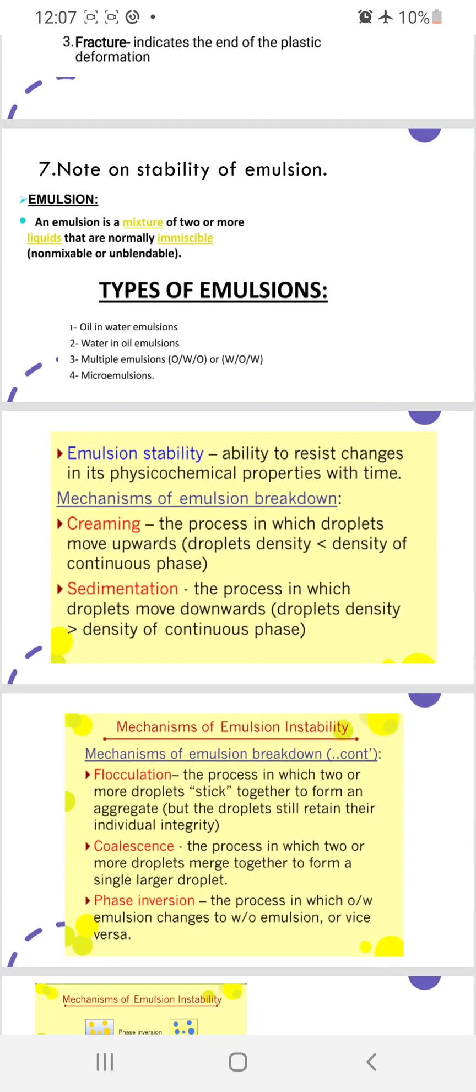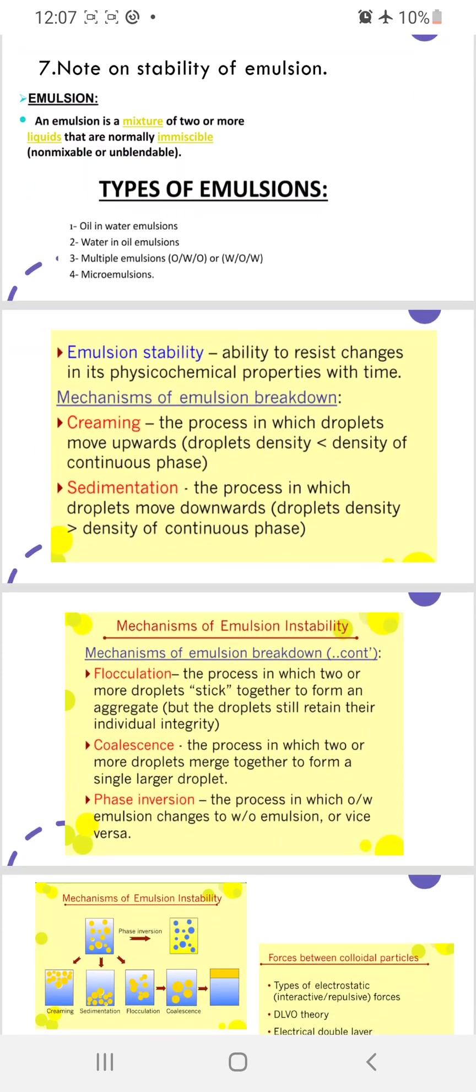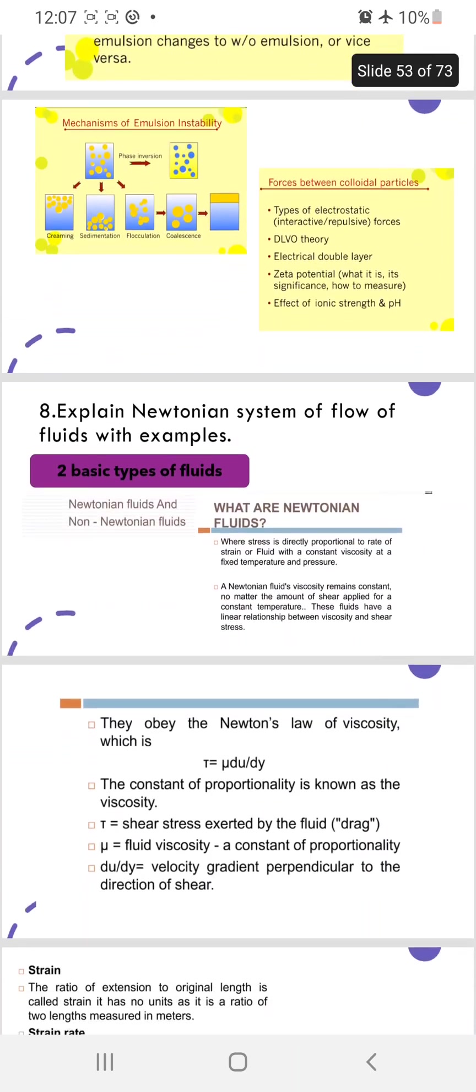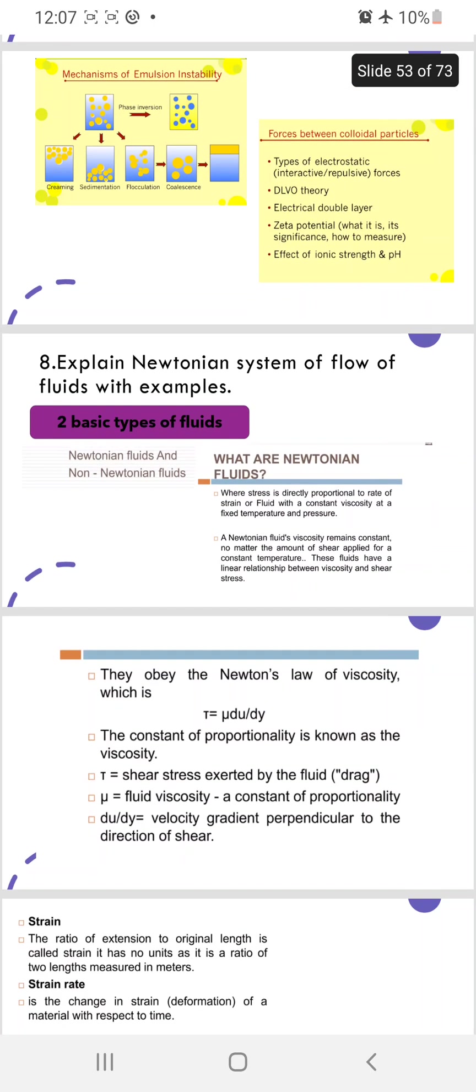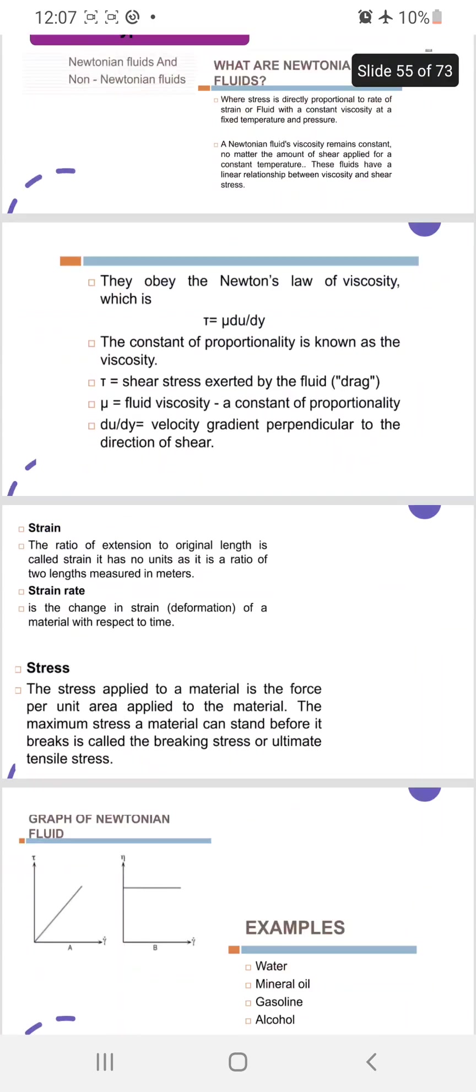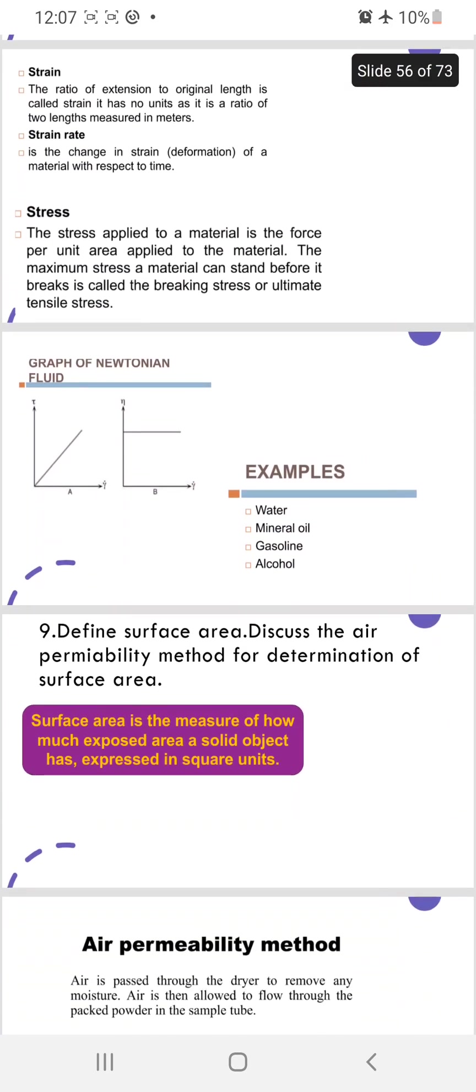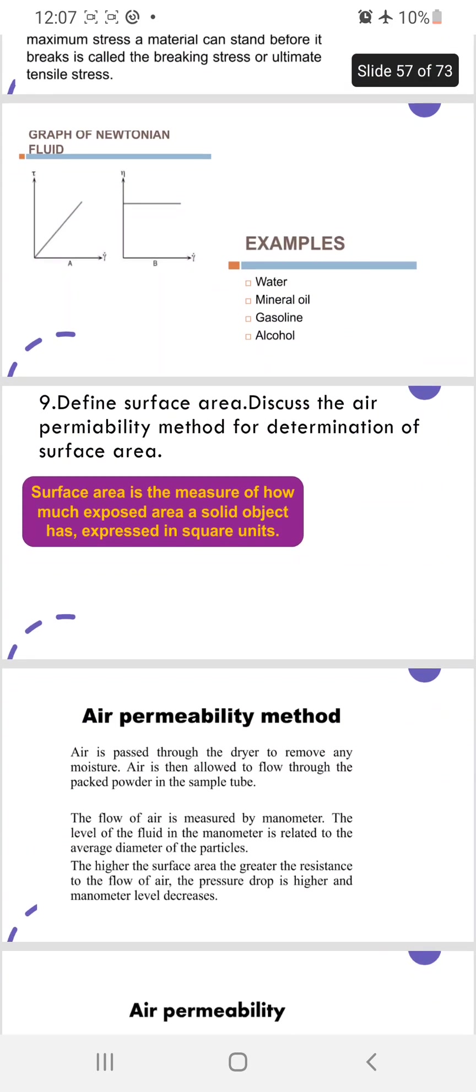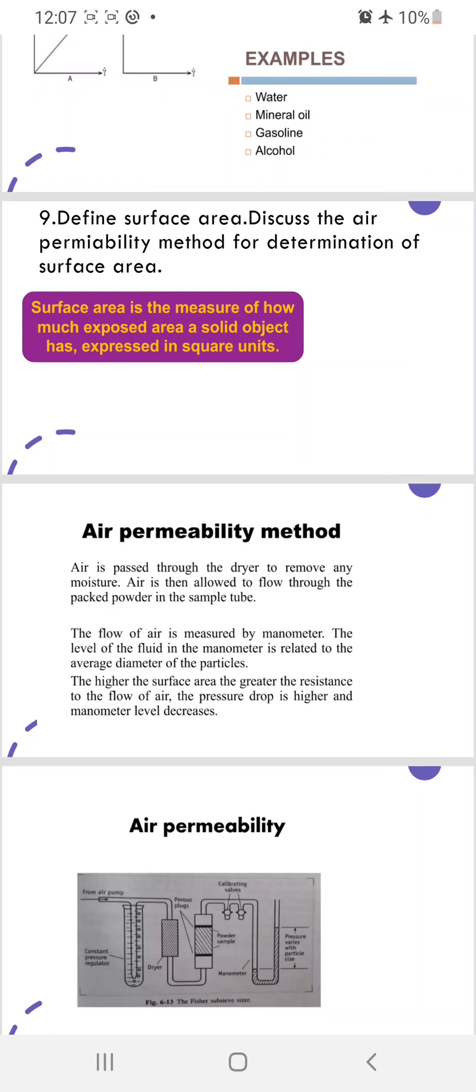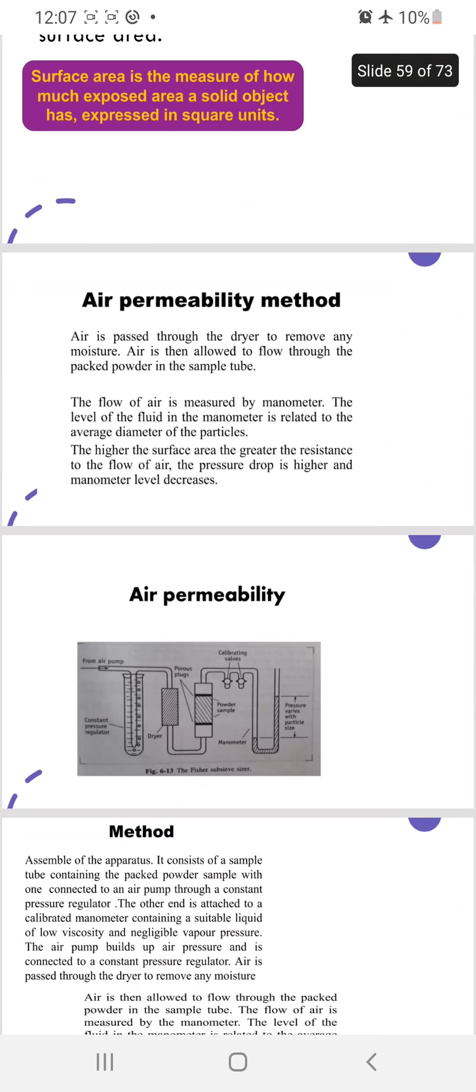Seventh: write a note on stability of emulsion. Types of emulsion first you have to write then go on writing the stabilities. Explain Newtonian system - what is the Newtonian system you have to explain with the graph. Ninth: define surface area, discuss the air permeability method. This is air permeability method - diagram, principle, method and all.